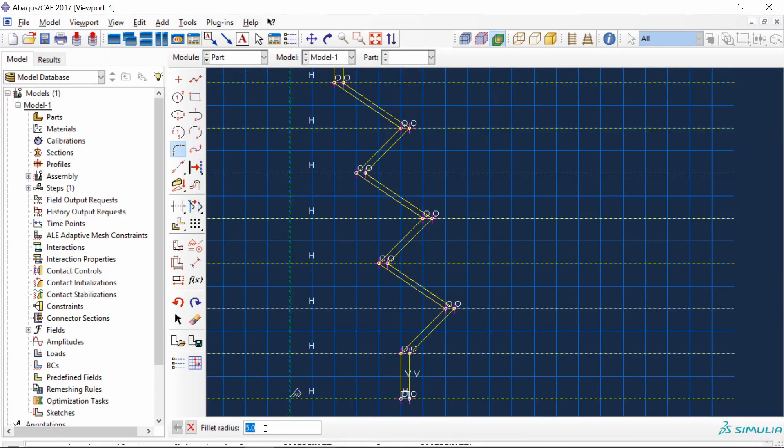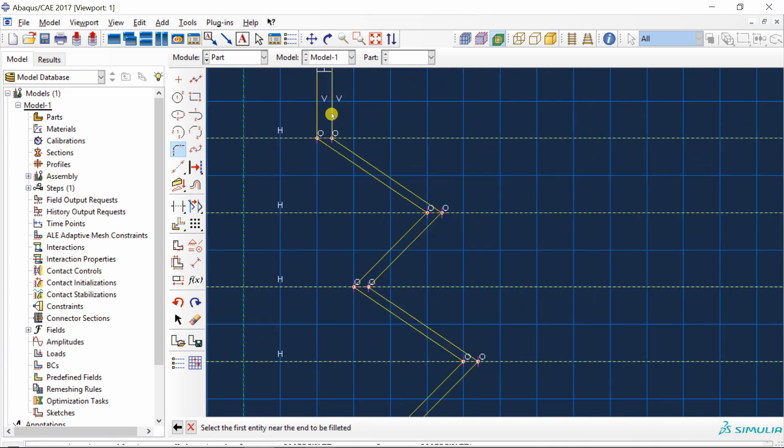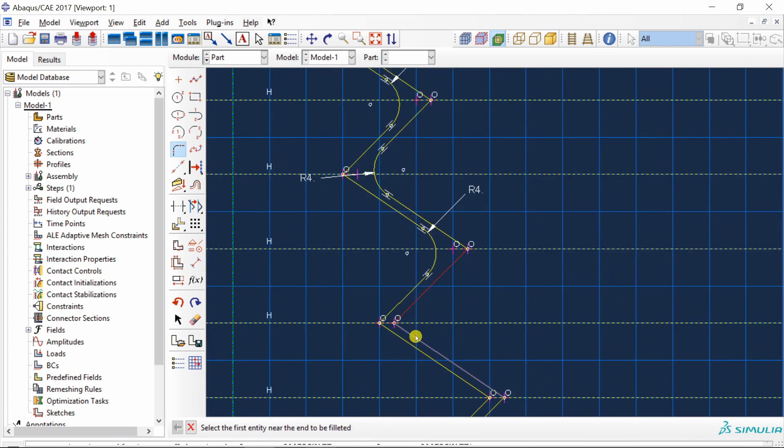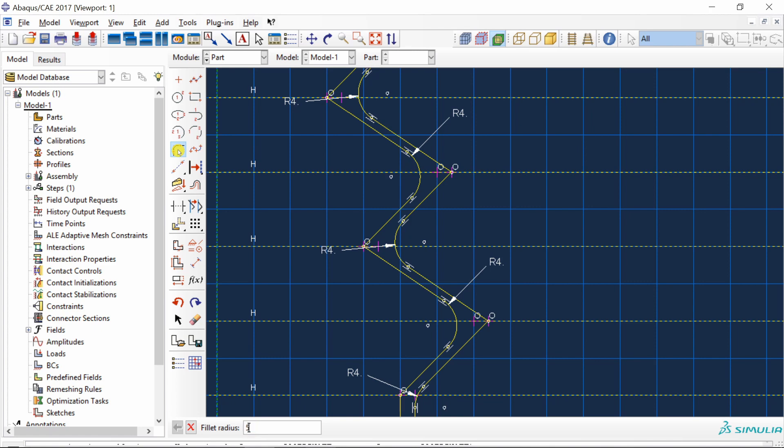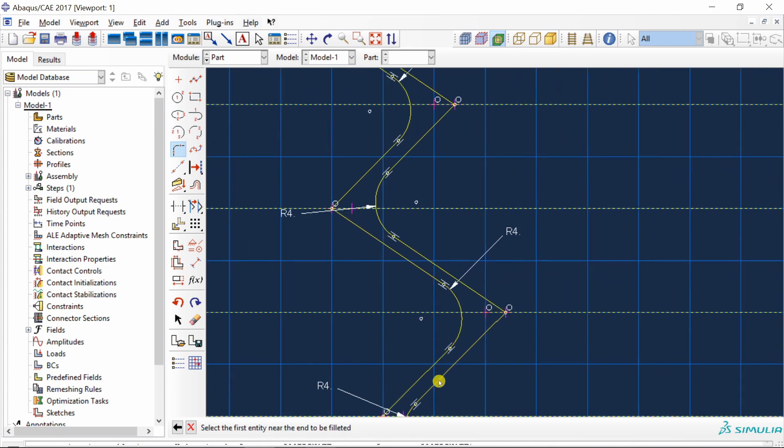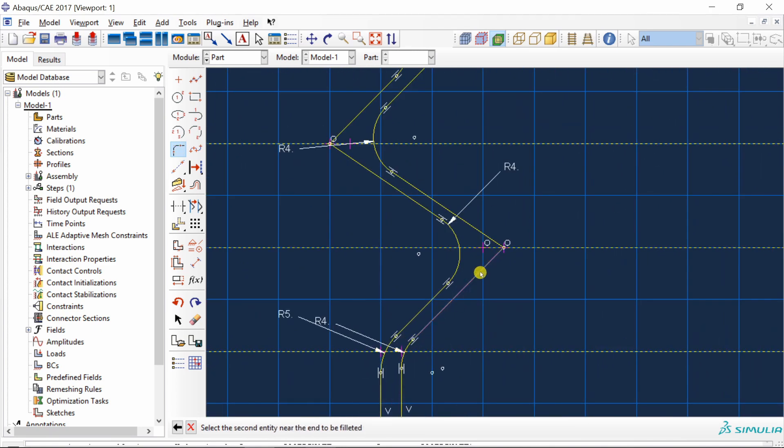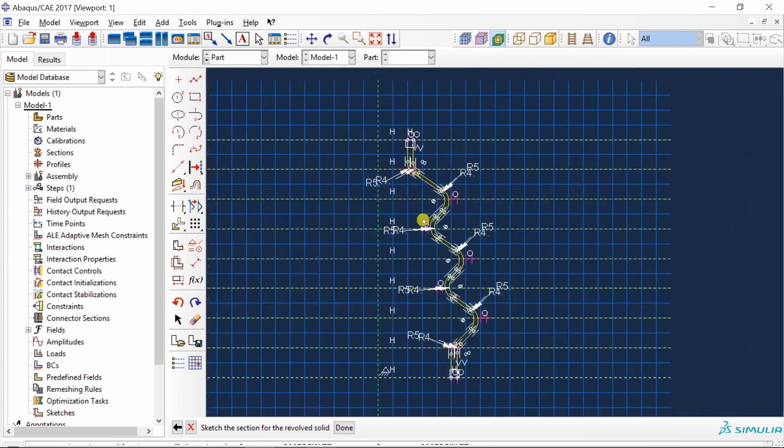One more time, outside points. That's it. Now we just have to use this fillet tool to round the corners. You can see over here, always radius of inside fillet is 4 mm and radius of outside fillet is 5 mm.